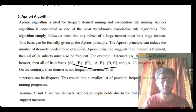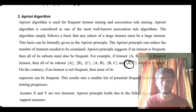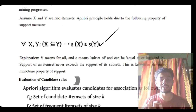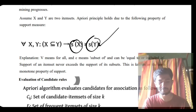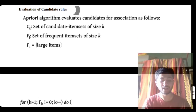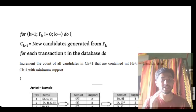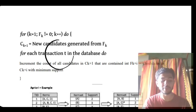Two key points to write: first, if an item set is frequent, all its subsets will also be frequent — if {a,b,c} is frequent, then {a,b}, {b,c}, {a,c} are all frequent. Second, if {a,c} is not frequent, then {a,b,c} will never be frequent. You also write about candidate rule evaluation: Ck is the candidate item set, Fk is the frequent item set, and you run a loop updating and keeping only the most frequently occurring values.